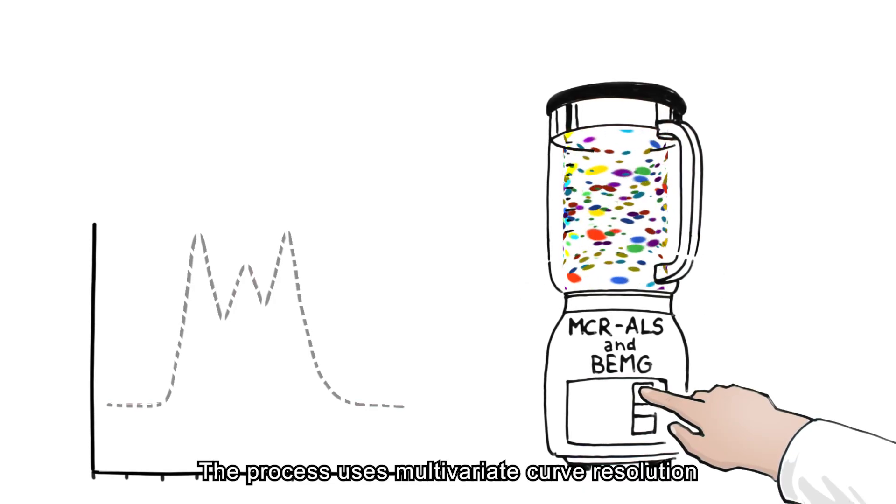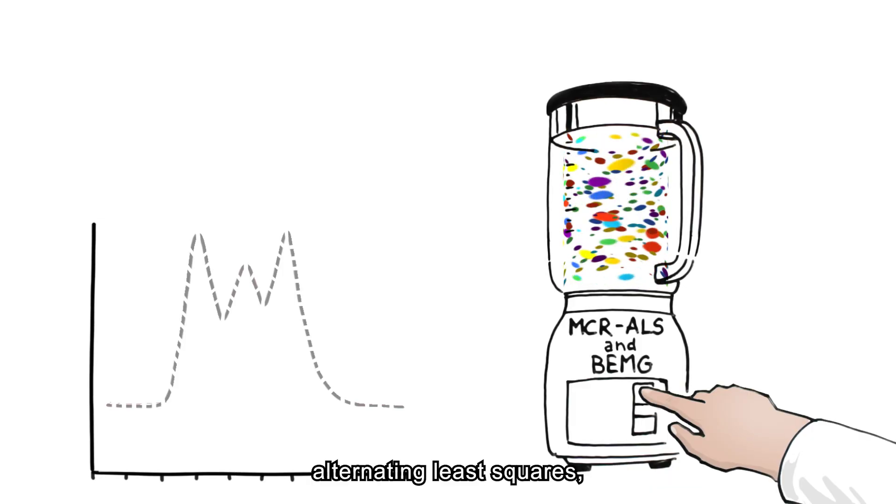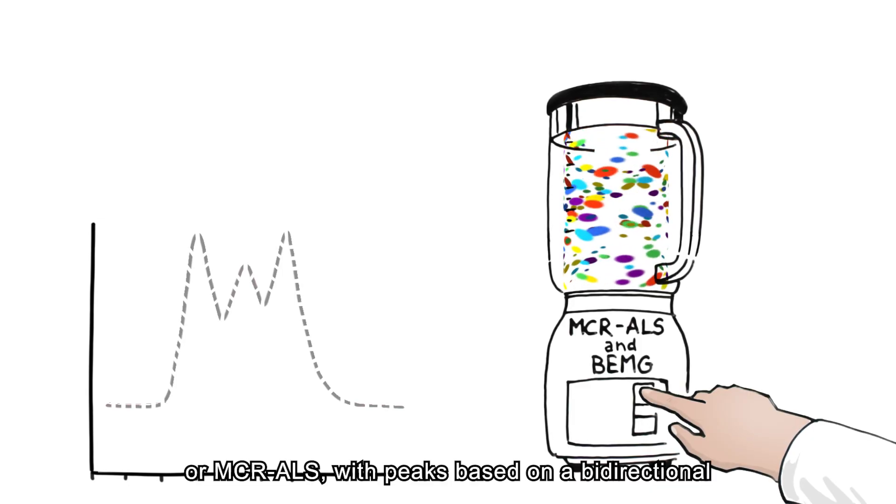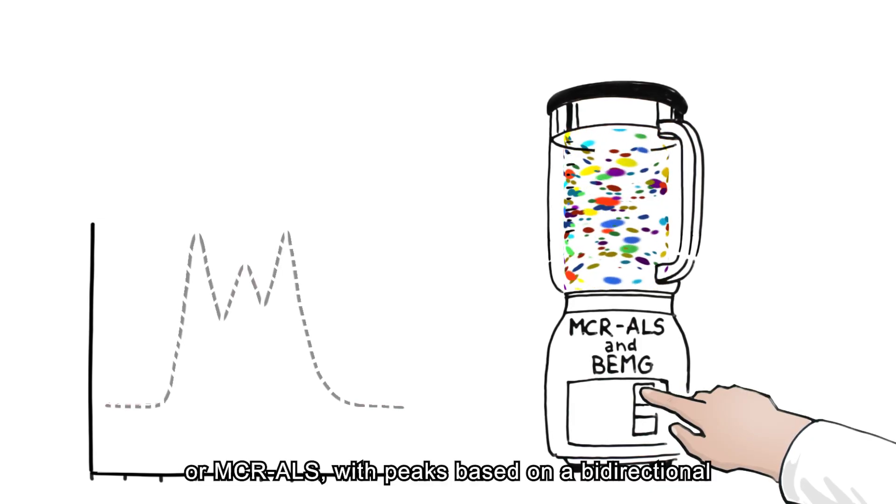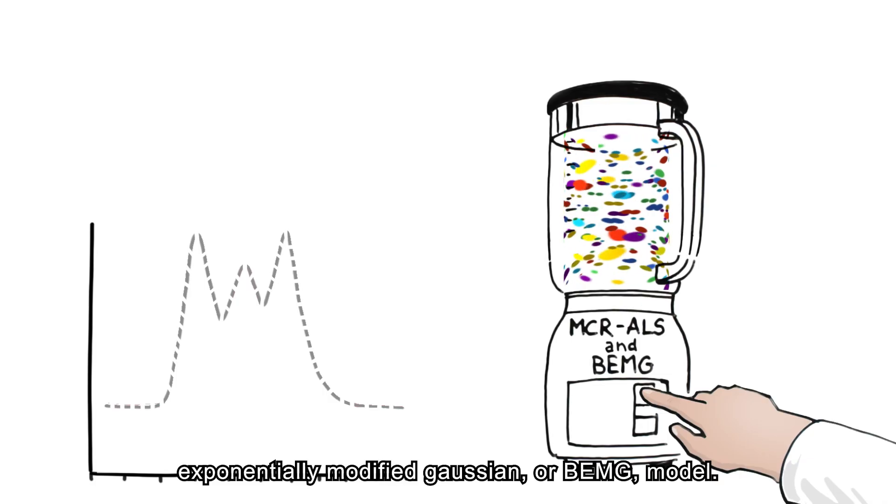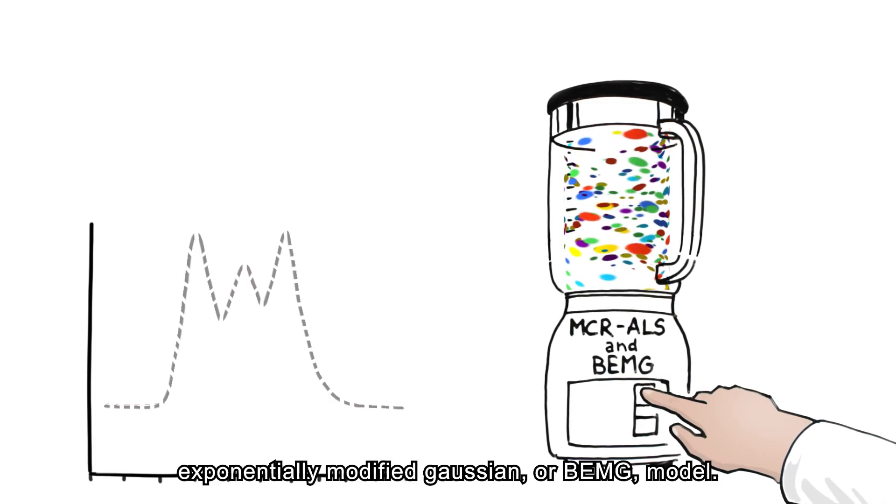The process uses multivariate curve resolution alternating least squares, or MCR-ALS, with peaks based on a bi-directional, exponentially modified Gaussian, or BEMG model.